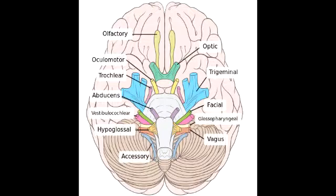What is the name of cranial nerve 2? The name of cranial nerve 2 is the optic nerve. Its function is for sight. Cranial nerve 2 is a sensory nerve.